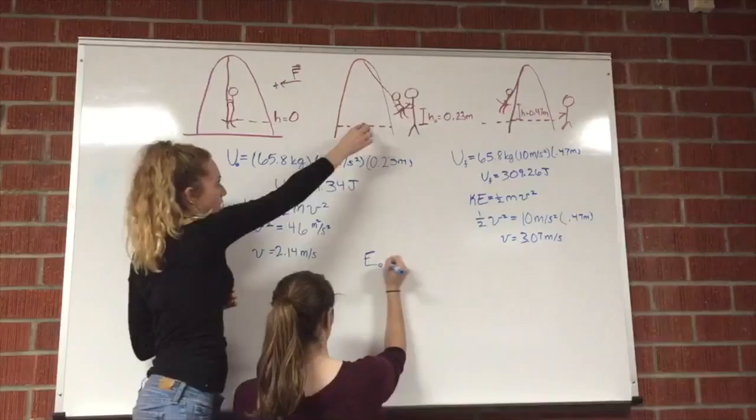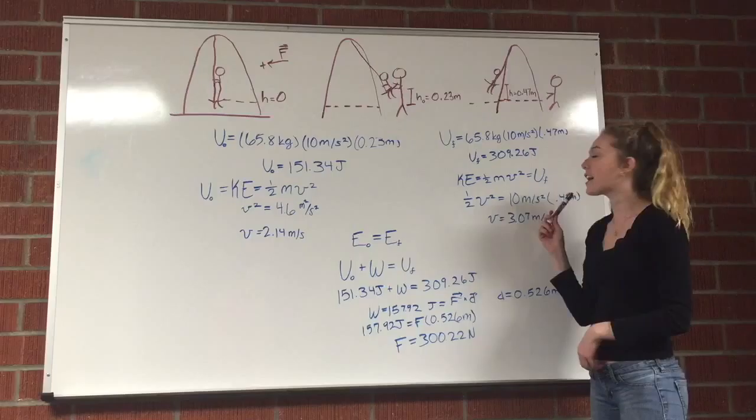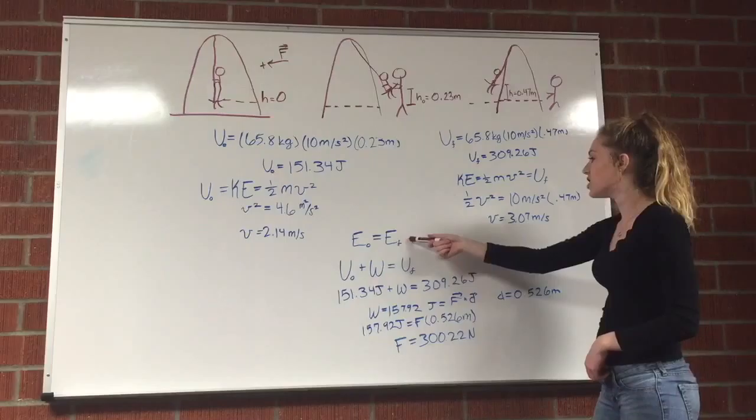Using this potential energy, we know that the kinetic energy at the bottom equals that, so the velocity at the bottom was about 3 meters per second.